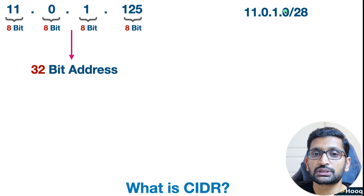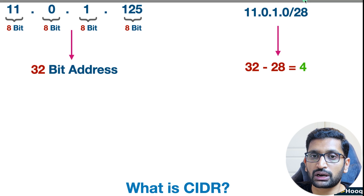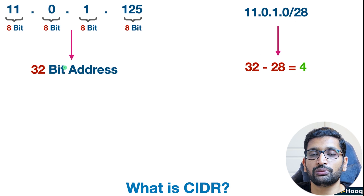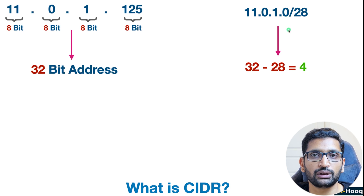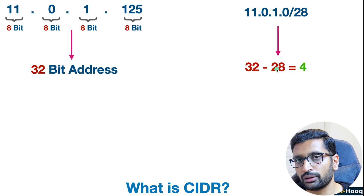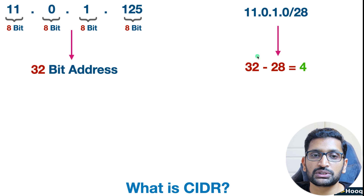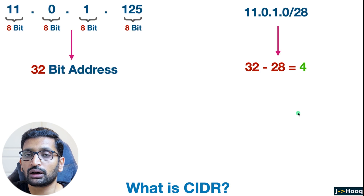Here you can see a CIDR range ending with /28, and we need to calculate the IP addresses possible from it. To do that, you subtract 28 from 32 — the 32 comes from the fact that any IPv4 address is 32 bits. So for any CIDR notation, whether it ends with /28, /24, /16, or /8, you just subtract from 32. Subtracting 28 from 32 gives an answer of 4.